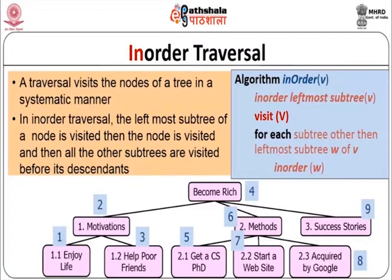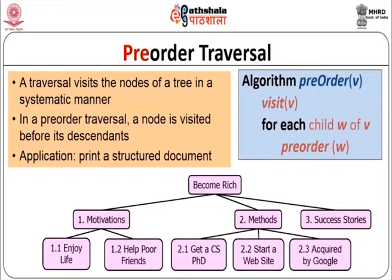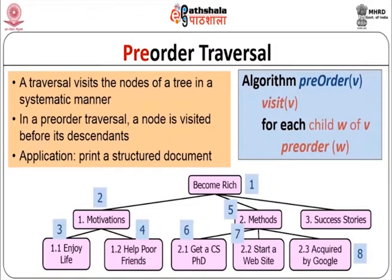Using the same tree for pre-order traversal: in a pre-order traversal, a node is visited before its descendants. The algorithm is: visit V, then for each child W of V, do pre-order. You visit the root first, then go to the leftmost child first in left-to-right order, then visit it and go to its children. Once one child subtree is finished, you go to the next child. If you compare in-order and pre-order traversal on the same tree, the orders are vastly different. Traversal is not only for binary but also for general trees.